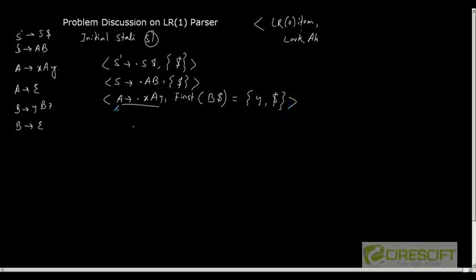Similarly, for A as epsilon — written as A as dot — without consuming any symbol, the look-ahead symbol is also Y comma dollar. So this completes state S1.